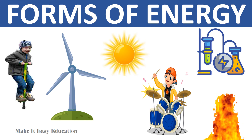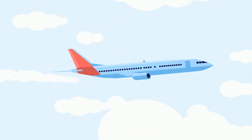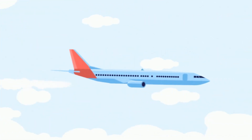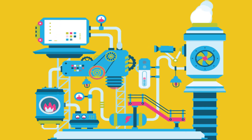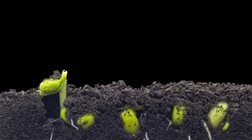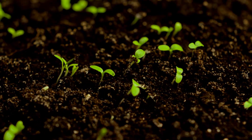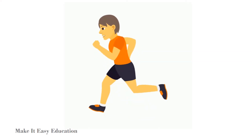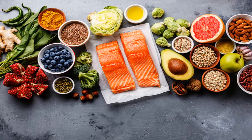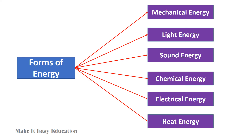Forms of energy. Energy makes things move; it makes machines work. Energy also makes living things grow. This man needs energy to run. He gets energy from the food he eats. The various forms of energy are mechanical energy, light energy, sound energy, chemical energy, electrical energy, and heat energy.